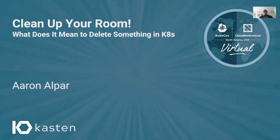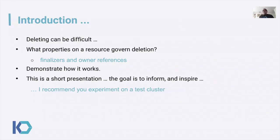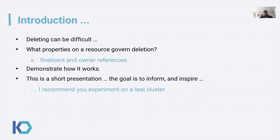Today, I'm going to be talking about delete, which can be difficult. Specifically, I'm going to be talking about what properties on a resource can govern deletion. The two things I'm going to focus on are finalizers and owner references, and I'll get into details on how these two things can affect deletion of objects within Kubernetes. I'm going to demonstrate how it works, and this is a short presentation — 30 minutes plus Q&A. The goal here is to inform, inspire, and make you dangerous. I encourage you to take what you learn here and experiment with it on a test cluster.